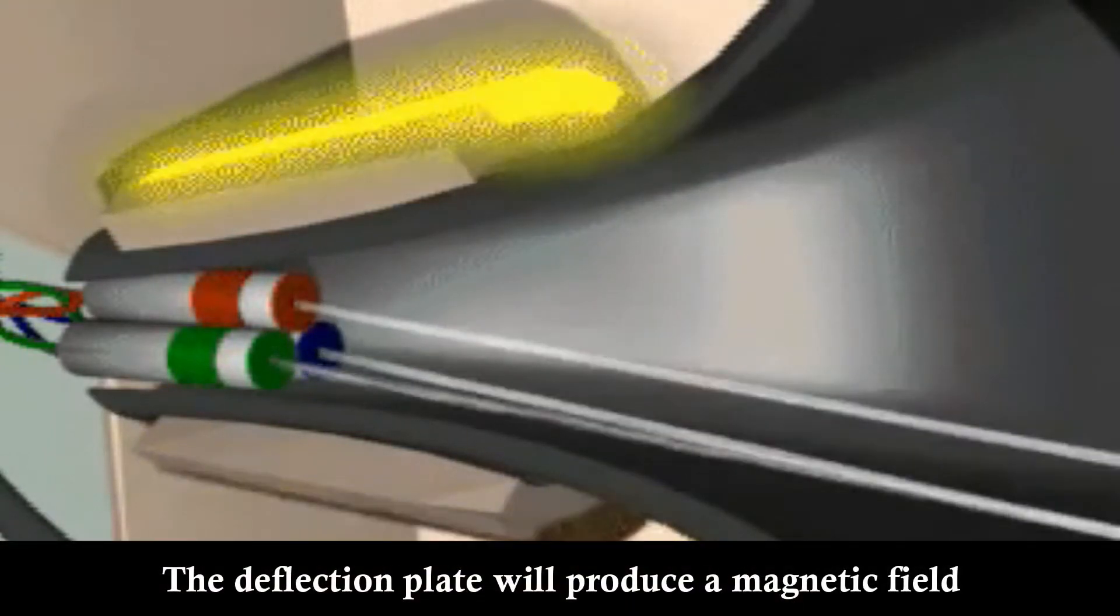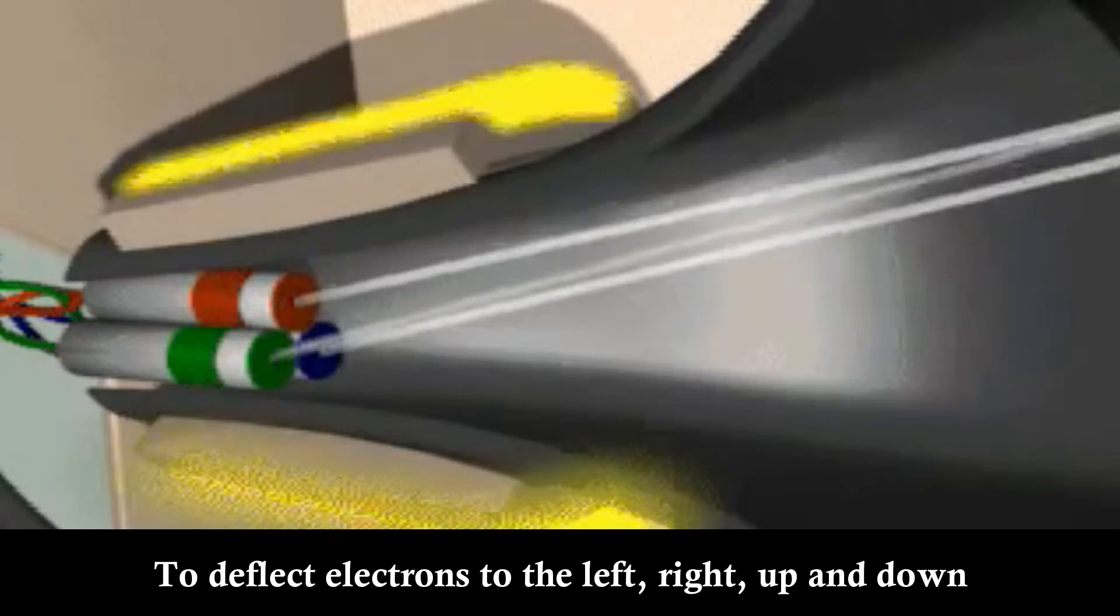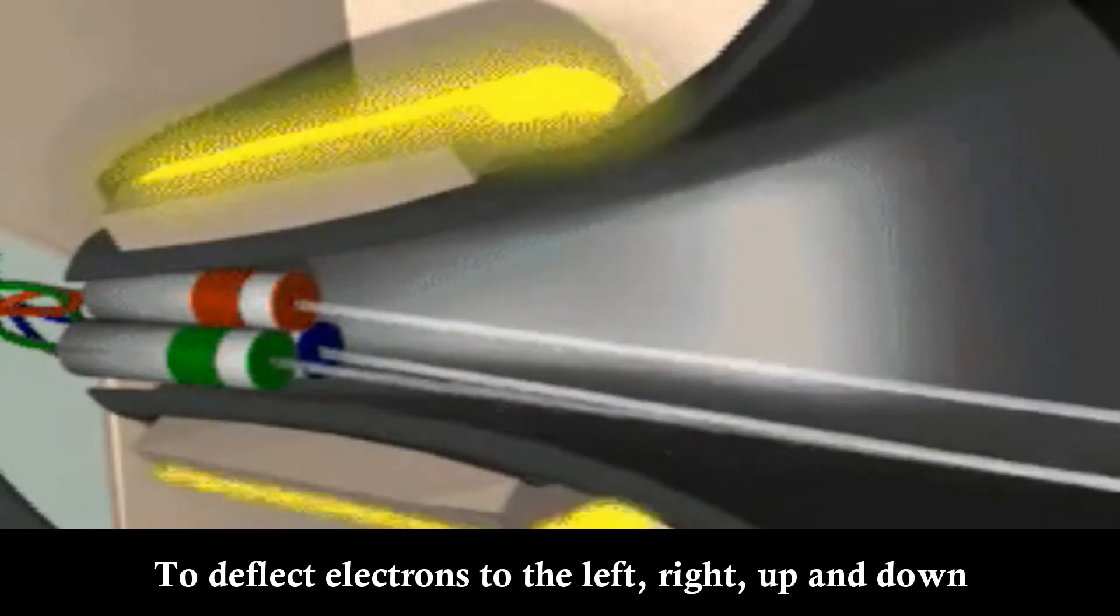The deflection plate produces a magnetic field to deflect electrons left, right, up, and down.